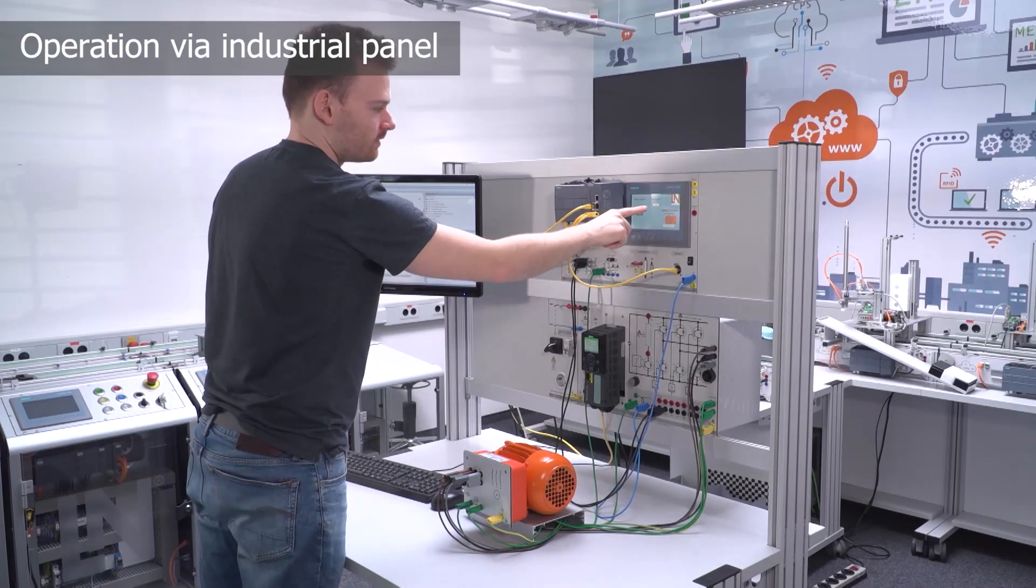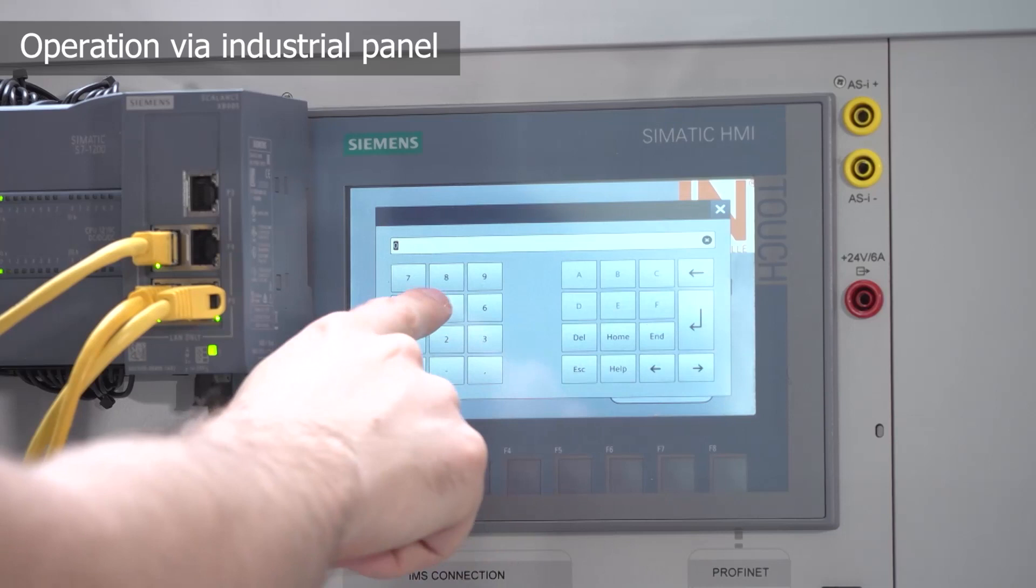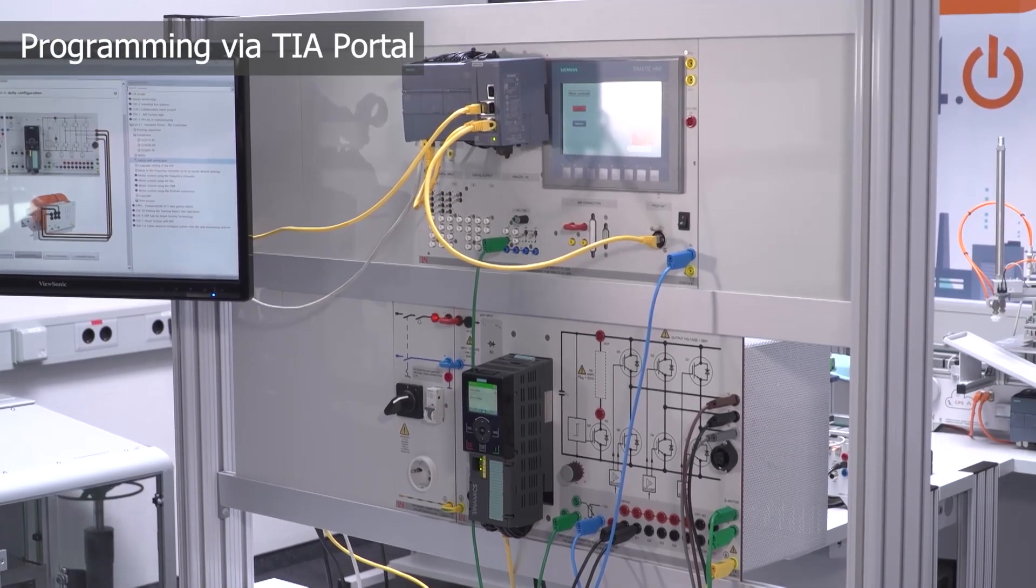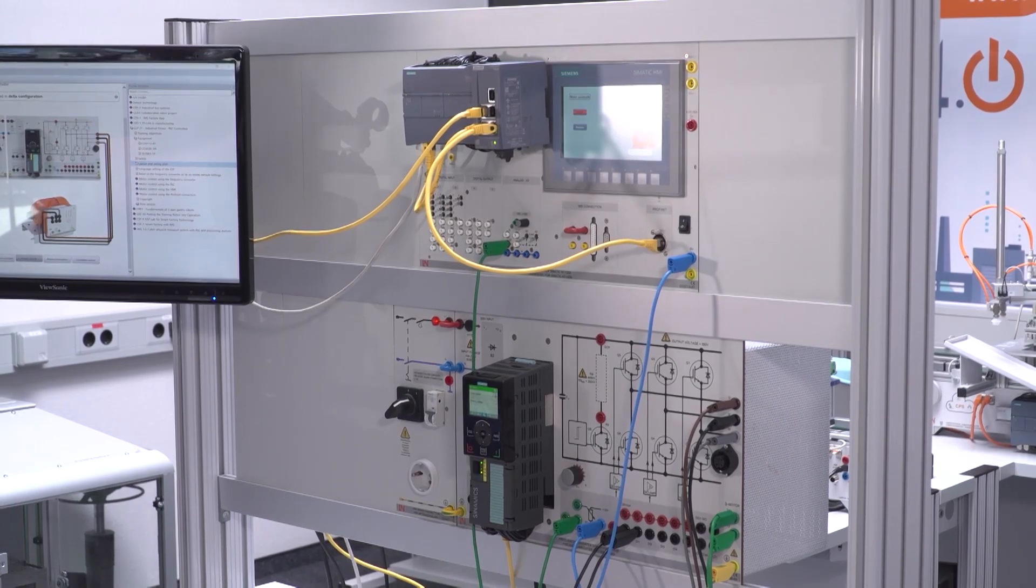An industrial panel with 7-inch touch display screen is available for control operation. Programming is carried out using the industrial software TIA Portal from Siemens.